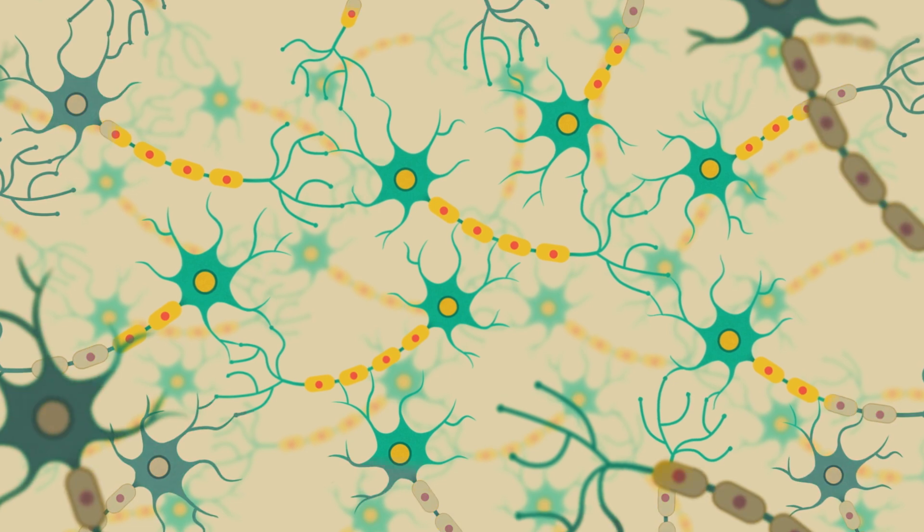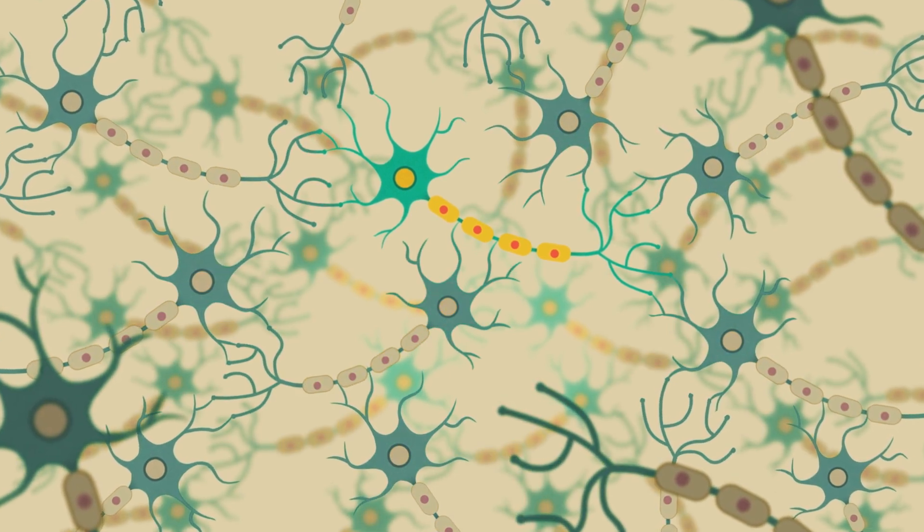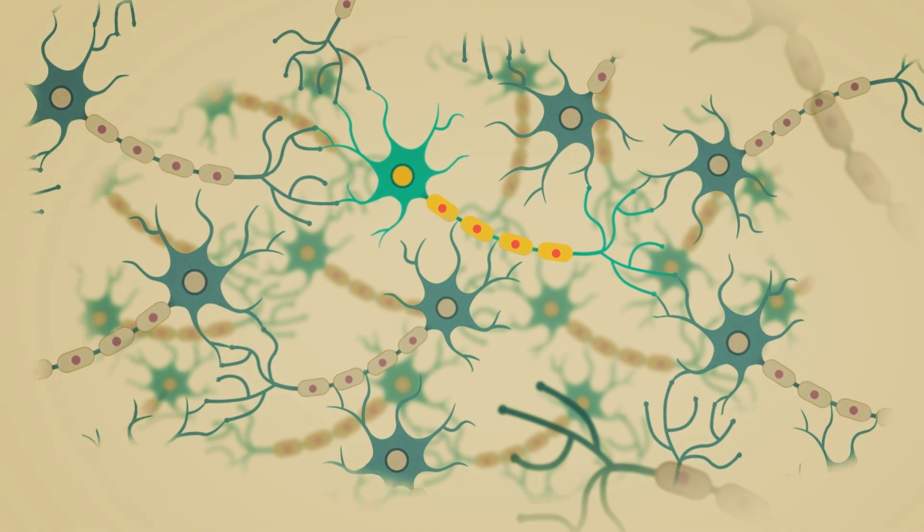If a nerve cell is starved of oxygen, or nutrients, or becomes isolated from its neighbors, it will die.